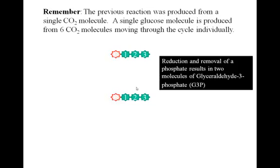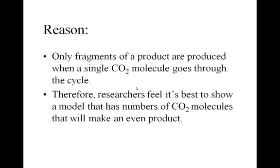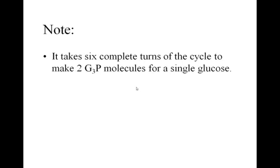The previous reaction was produced from a single CO2 molecule. A single glucose molecule is produced from 6 CO2 molecules moving through the cycle individually. So remember, only one CO2 molecule enters the Calvin cycle at a time. It is best to show 3 or 6 CO2 molecules going through the cycle at once so that we get full products. Only fragments of the product are produced when a single CO2 molecule goes through the cycle. And it takes 6 complete turns of the cycle to make 2 glyceraldehyde 3-phosphate molecules for a single glucose.